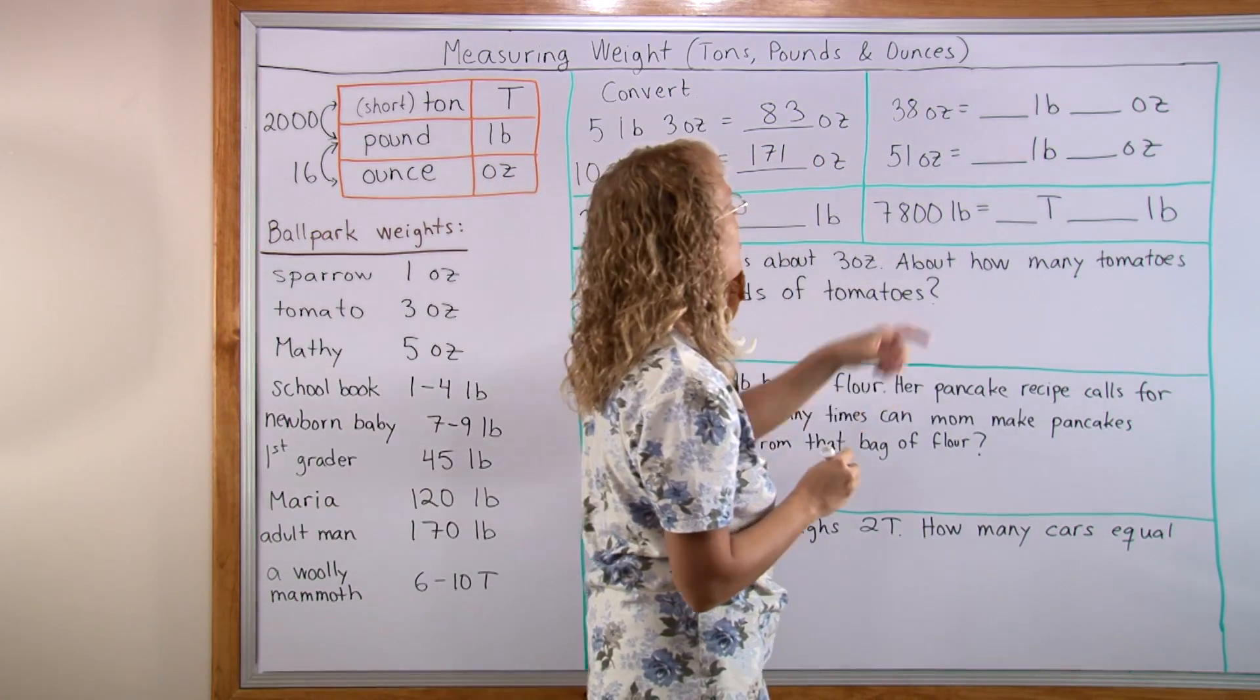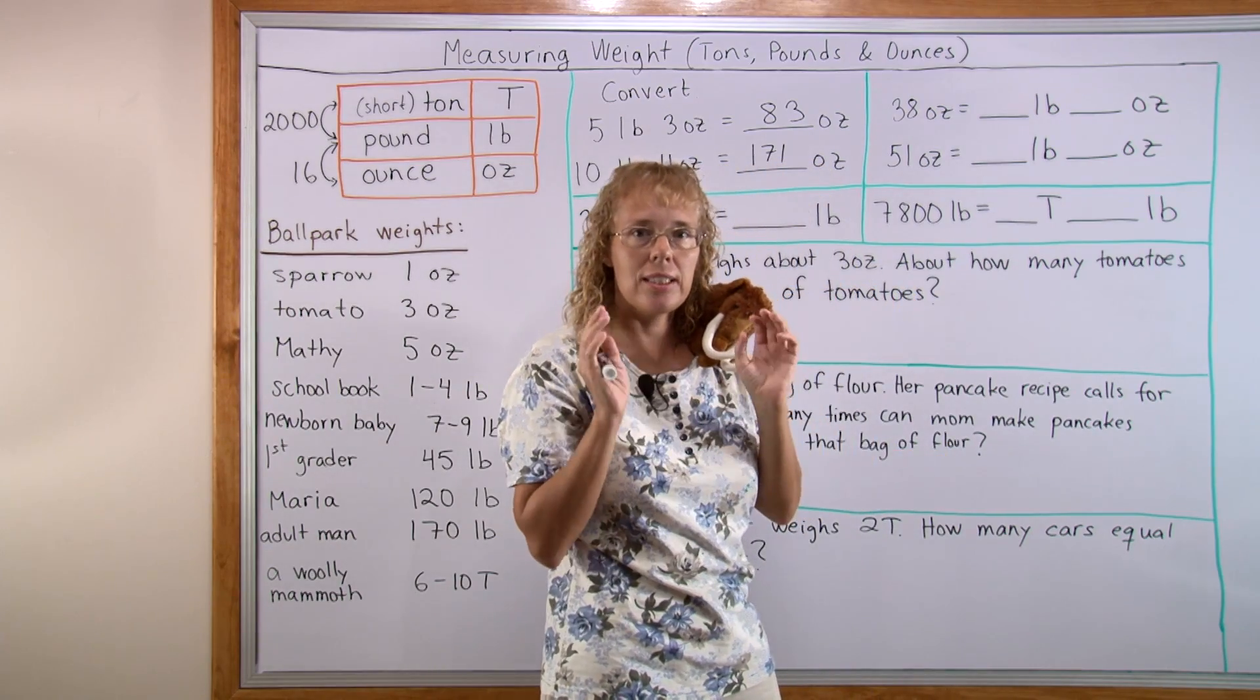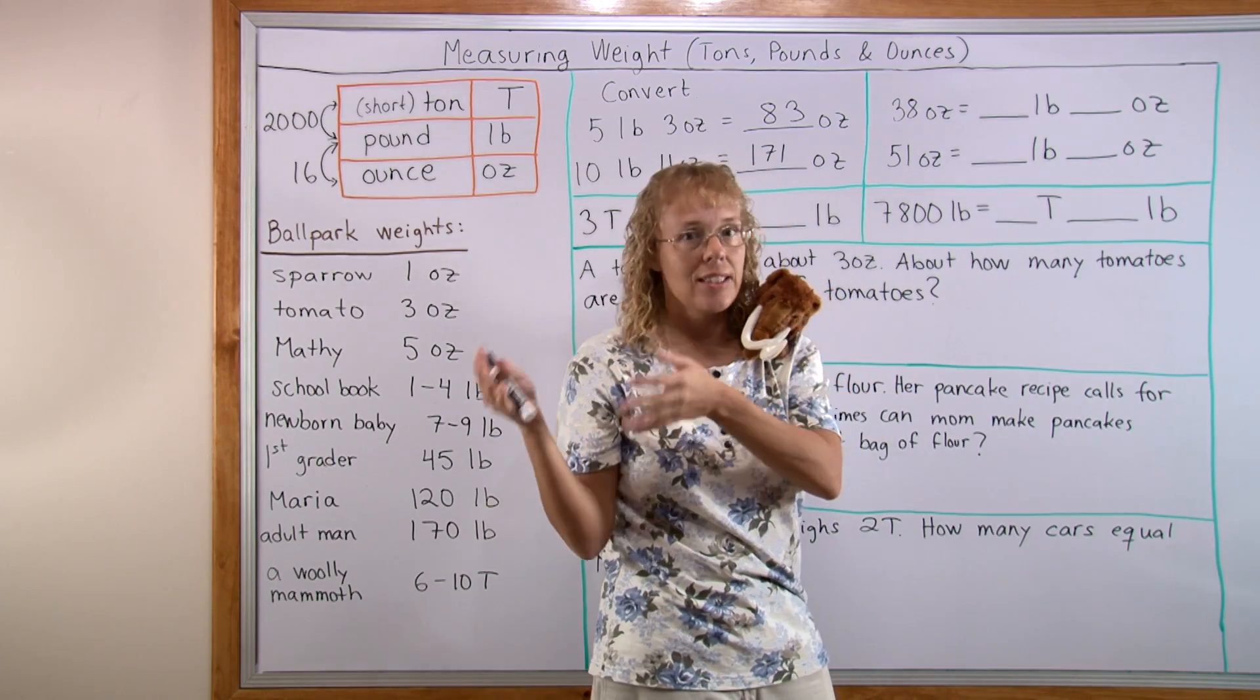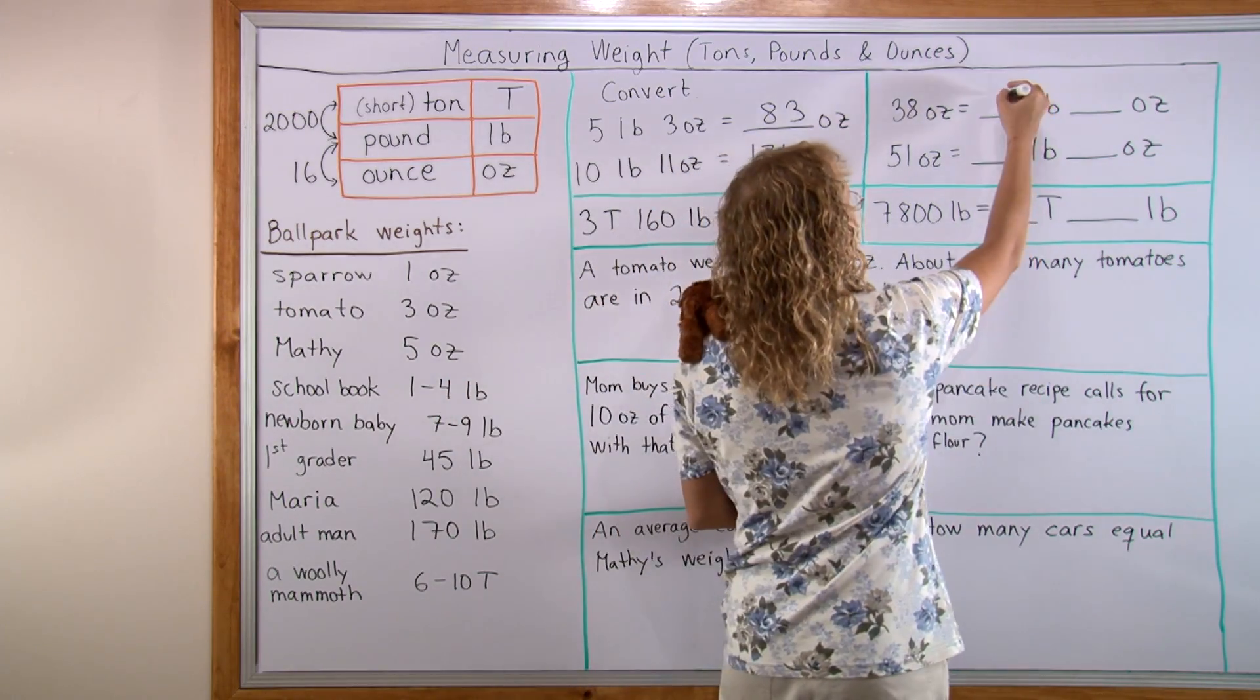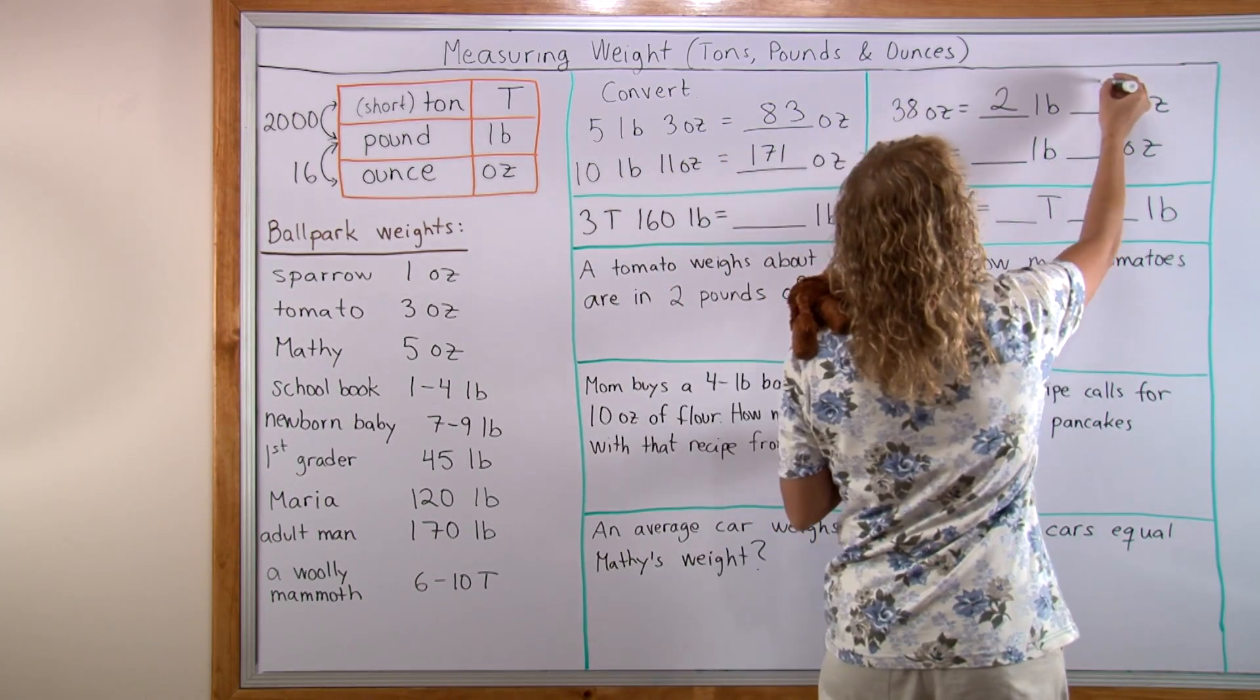Now the other way around: 38 ounces, how many pounds and ounces? We need to think about 16. How many 16s are in 38? 16 and 16 is 32, so 2 pounds. That makes 32 ounces with 6 ounces left over.